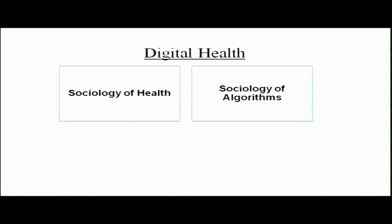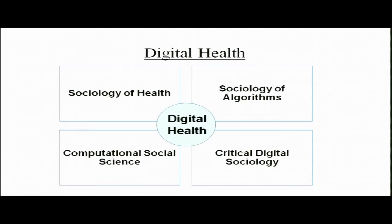From a sociological perspective when we talk of digital health we come across four broad areas that inform each other and make possible the growth of digital health. Digital health is sitting at the center of these broad disciplines: sociology of health, sociology of algorithms, computational social science, and critical digital sociology. All of these actually merge at a point to give us an understanding of digital health or digital healthcare. When you have to understand how digital health works, it will be important to bring in understanding from each of these fields of inquiry.